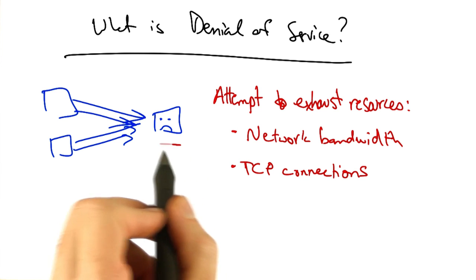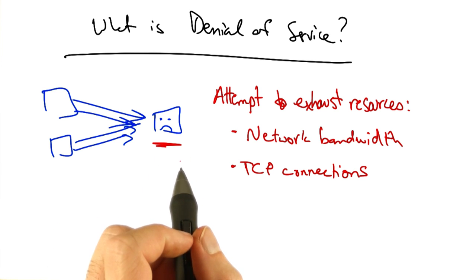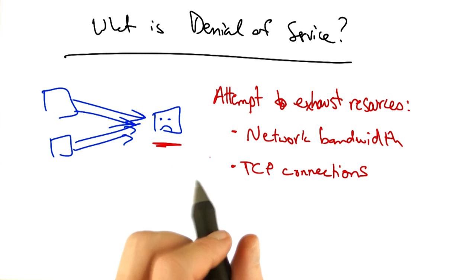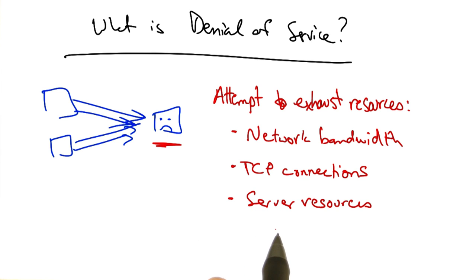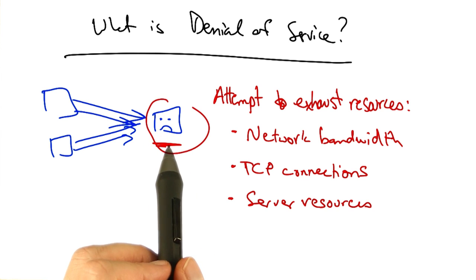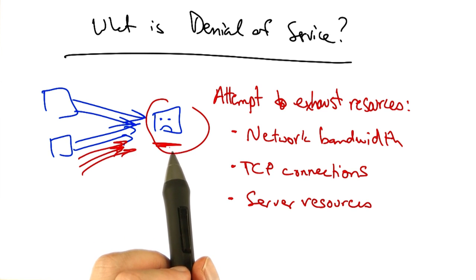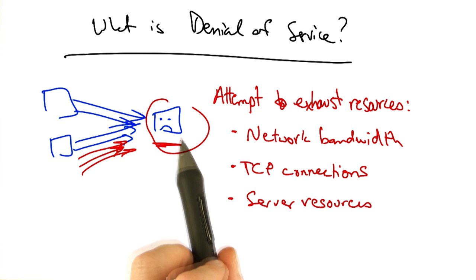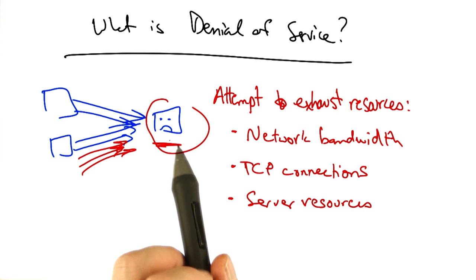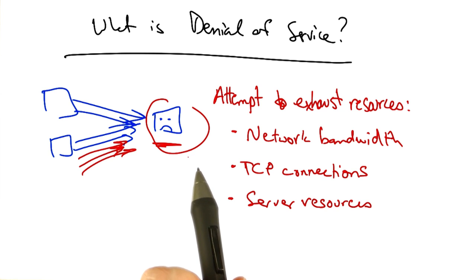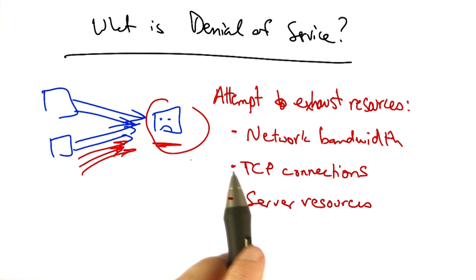For example, a host might have only a limited number of TCP connections that it can open to various clients. Or the denial of service attack might attempt to exhaust various server resources. For example, this victim might be a web server running complicated scripts to render web pages. And if the web server suddenly becomes the target of a bunch of bogus requests, the server could spend a lot of resources rendering pages for requests that are not legitimate.